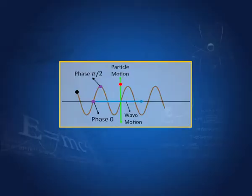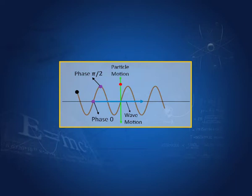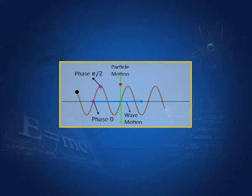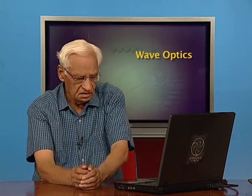Now let me define the phase of a wave. The position of a particle determines the phase of the wave. If this particle is at the top, the phase is π/2. If this particle is here, the phase is 0. The phase would be π here and again π/2 elsewhere. From here to here it is 2π. So the phase of a wave is the phase of a particle at a given position in the wave.